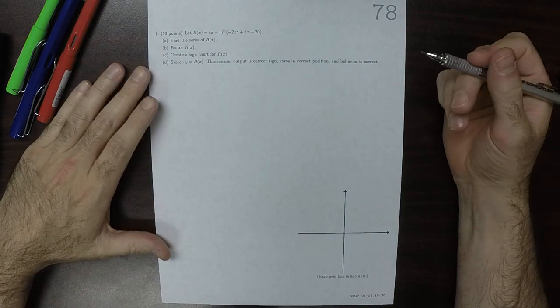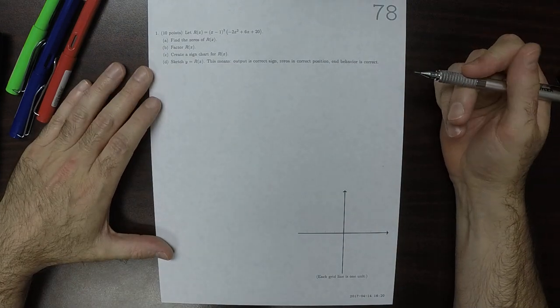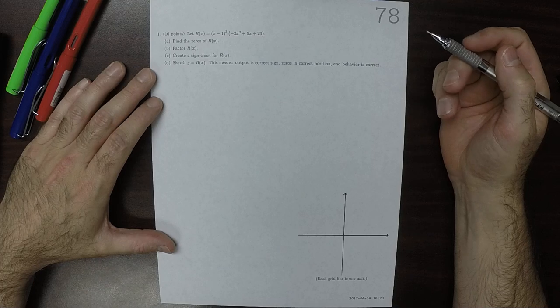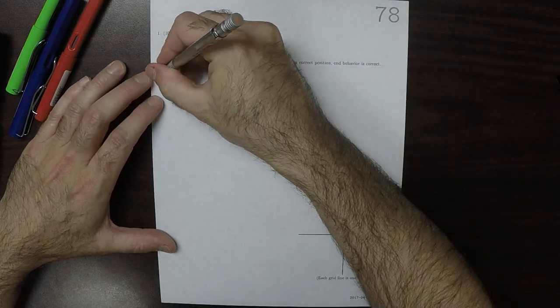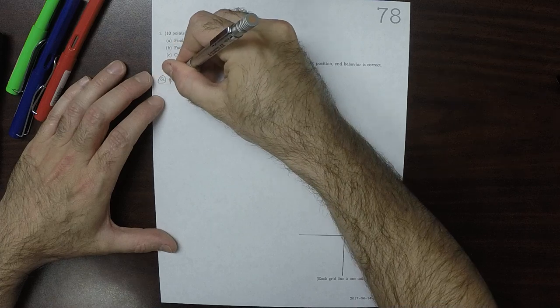This is the solution to written homework 78. OK. So we can do a and b at the same time.